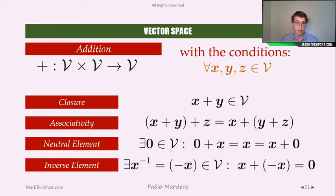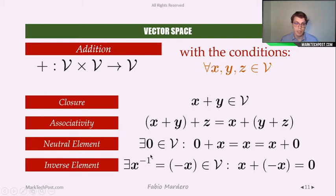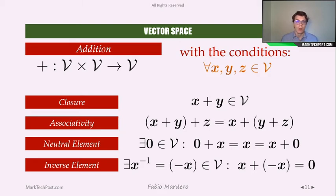I want to take a deeper look at the neutral element and inverse element. The neutral element means that there exists one vector — denoted here with zero — such that if we add zero to a vector, the result is the vector itself. For the inverse element, we write it as minus x, and the property states that if we add a vector and its inverse, the result will be the neutral element.